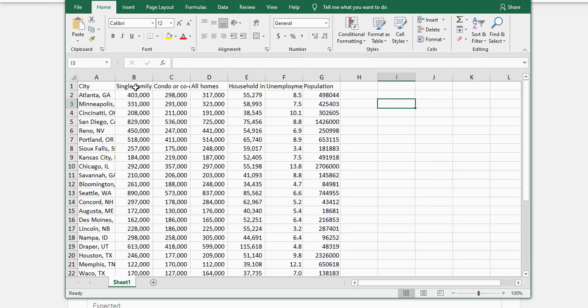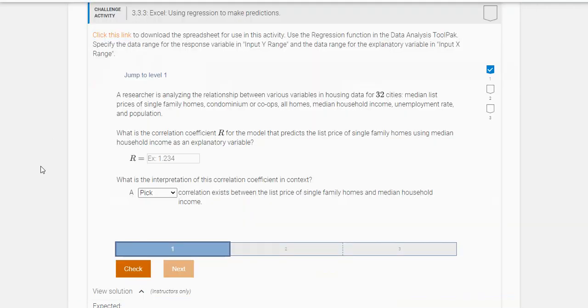You're going to have some values in cities and these are home prices of single family homes, condominiums or co-ops, all homes, and then it lists household income, the unemployment rate, and the population in these cities.